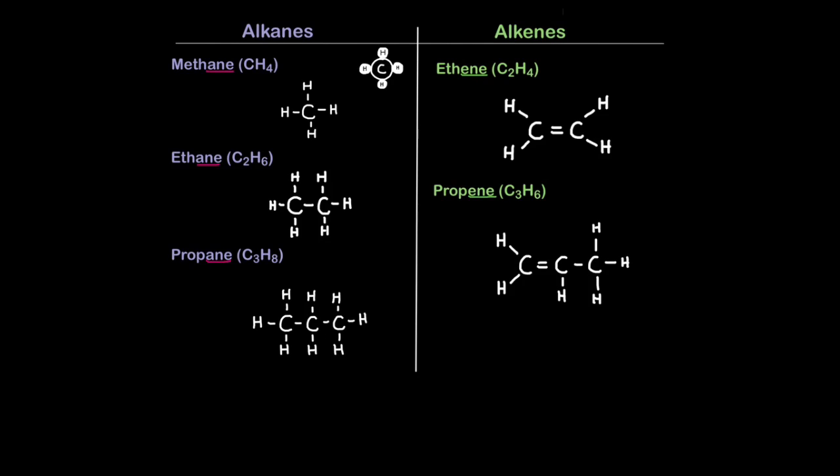Whereas alkenes: ethene is an alkene, propene is an alkene. In your exams, you will need to know how to draw all of these. Alkanes are very easy to draw because you just have your carbon backbone. One carbon here, two carbons here, three carbons here.